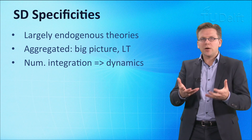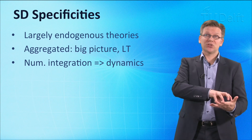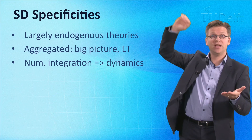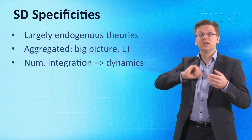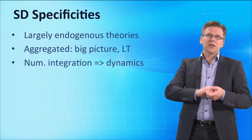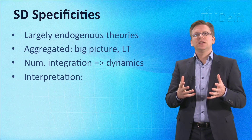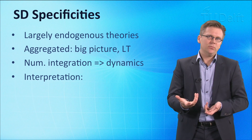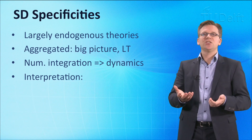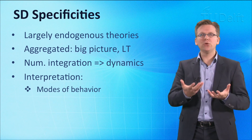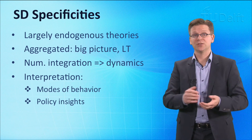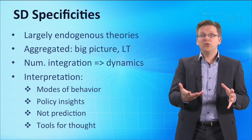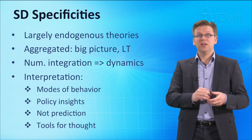In case of undesirable modes of behavior, system dynamicists analyze which structures need to be changed or added to change the undesirable modes of behavior, for example exponential growth, into more desirable modes of behavior, for example an S-shaped curve. So outcomes are not interpreted as precise predictions — outcomes are really general foresights at most. System dynamicists are far more interested in improving our understanding and changing faulty mental models and generating general policy insights than generating predictions. As such, system dynamics models are essentially tools for thought. More reflection beyond the model is also hugely important in the system dynamics process.